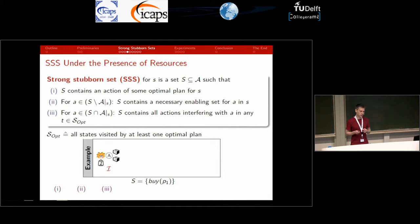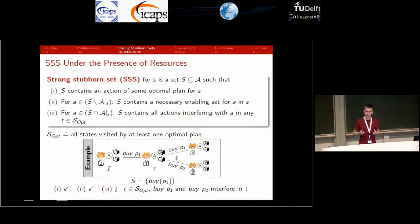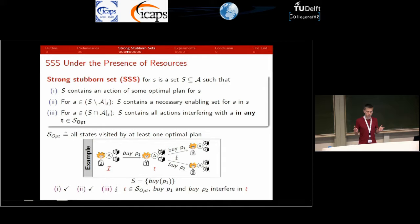If we consider the same set of actions in the resource-constrained version, conditions one and two are still satisfied for the same reasons. But regarding condition three, consider the state that results from applying buy P1. In this state, both buy actions actually interfere because they both set the number of available bags to zero — after applying one, the other can no longer be applied. This means that in the resource-constrained version, the only set satisfying the strong stubborn set definition is the one containing both buy P1 and buy P2, so we get no pruning at all.